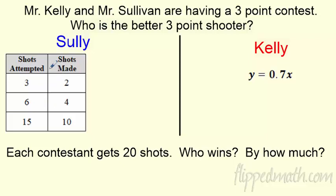Let's figure it out. So they go out and they're having a little practice round and Sully records his shots made and shots attempted. So he's making two out of three, four out of six, 10 out of 15. Writes that down. Mr. Kelly, on the other hand, since he's a math teacher, just writes an equation. He says this is how many shots he makes. So both these guys are proportional. I'm going to tell you their stuff is proportional.